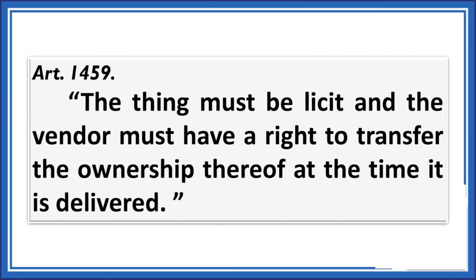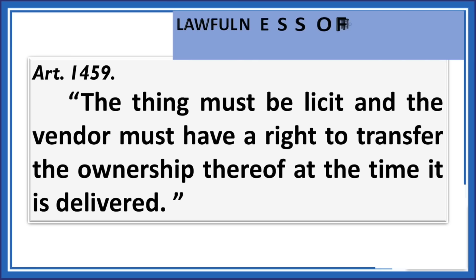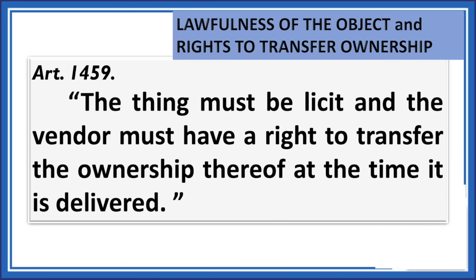Article 1459: 'The thing must be licit and the vendor must have a right to transfer the ownership thereof at the time it is delivered.' Article 1459 talks about two important mandates: the lawfulness of the object and the right to transfer ownership. The thing or object of sale must be licit — licit means lawful — meaning the object must be within the commerce of man; it must not be unlawful. If the object of the contract is unlawful or illicit, the contract is null and void. For example, the sale of marijuana or shabu — since the object is unlawful, that contract of sale is void. Another example: vote buying — the object is illicit, so it is void.